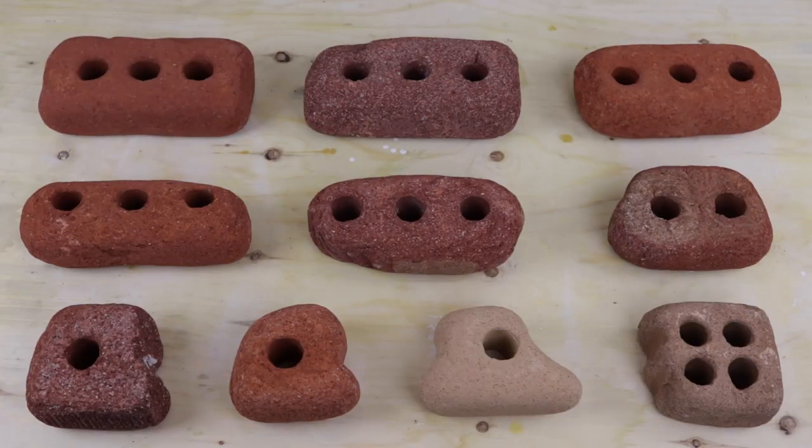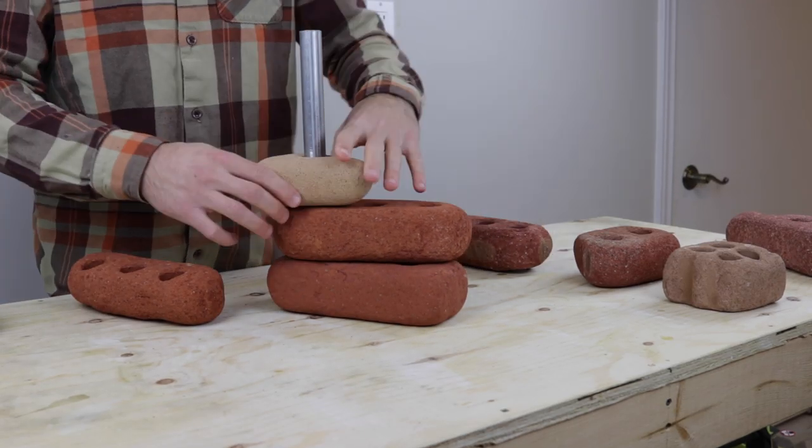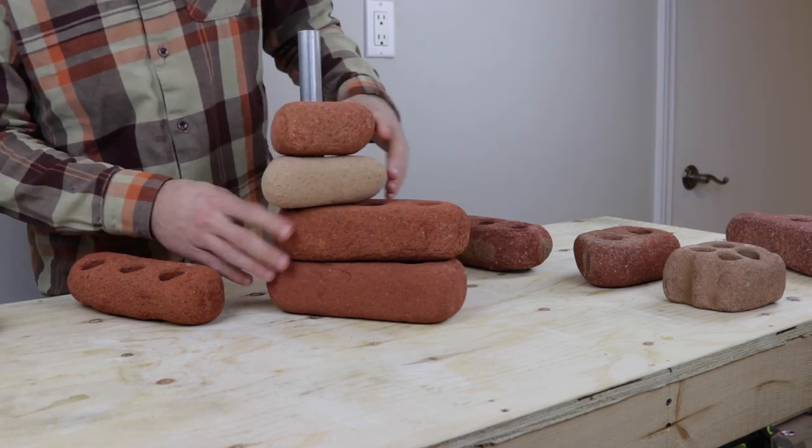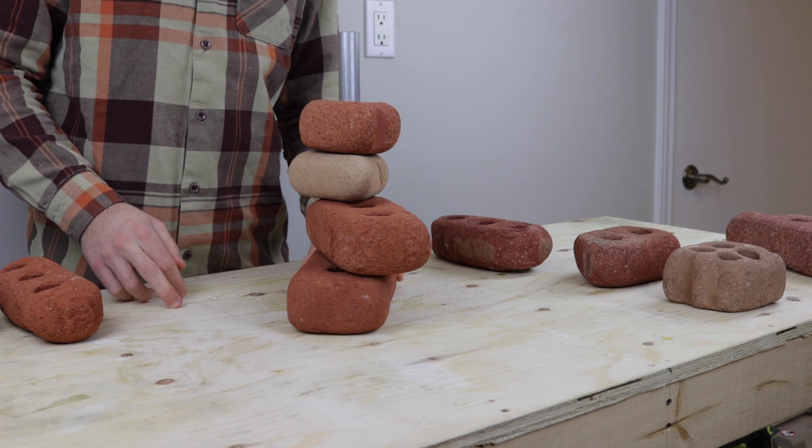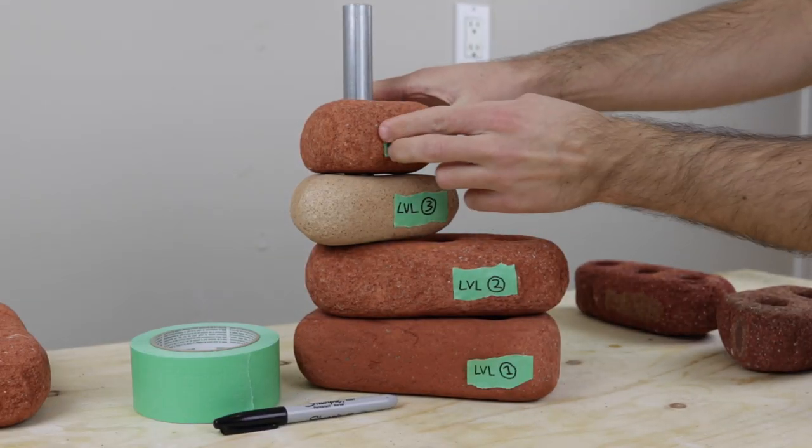I used the small section of conduit to start playing around with stacking configurations for the base of the lamp. I wanted the bricks to have a haphazard feel to them, like they were organically stacked. I labelled each brick to maintain their orientation.